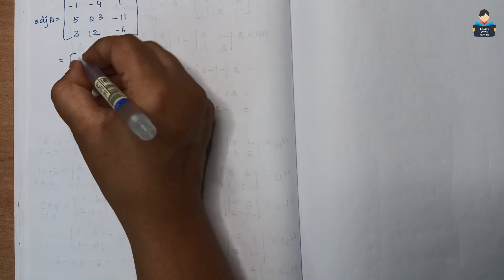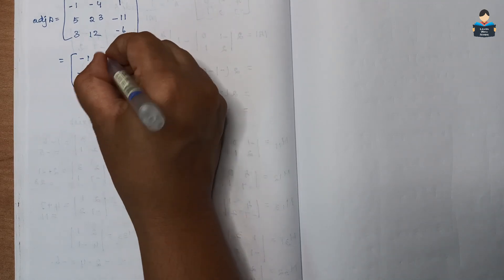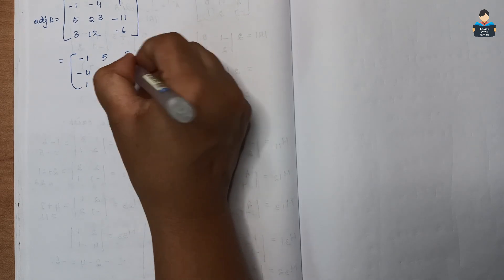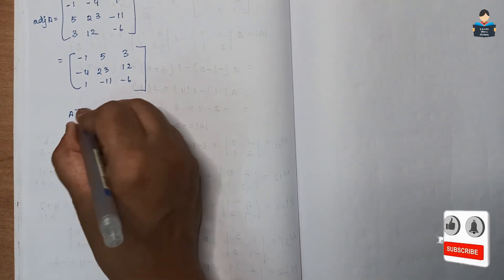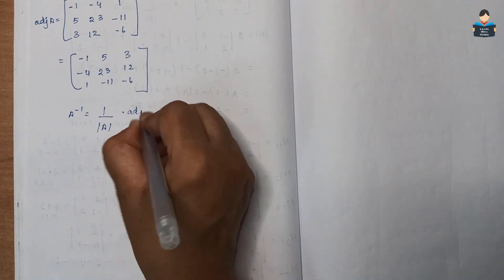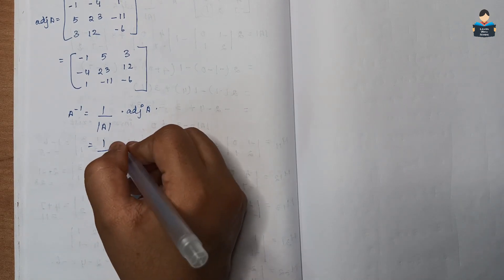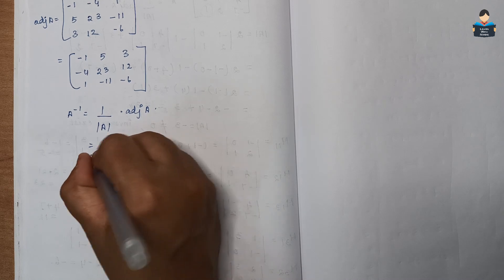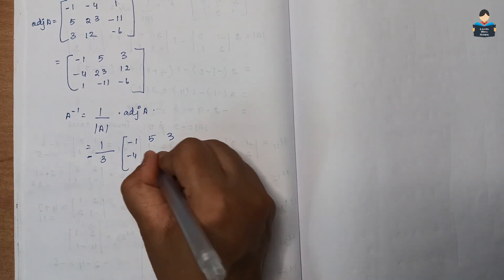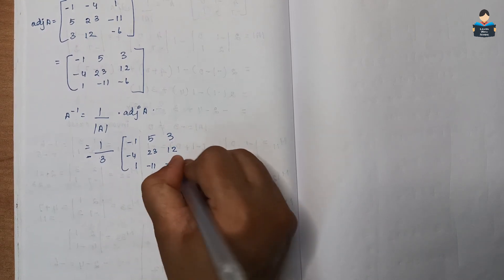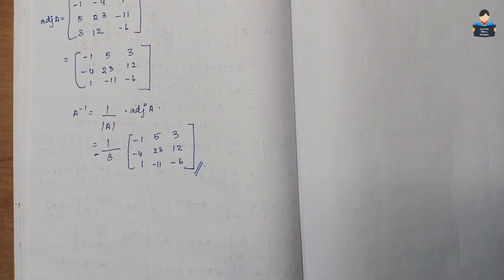The adjoint of A is the transpose of the cofactor matrix: [−1, 5, 3; −4, 23, 12; 1, −11, −6]. Therefore A inverse = (1 / det A) × adj A = (1 / −3) × [−1, 5, 3; −4, 23, 12; 1, −11, −6]. This is the final answer for Question 9. The video for this set of sums is now complete. Please like, share, and subscribe. Thank you.